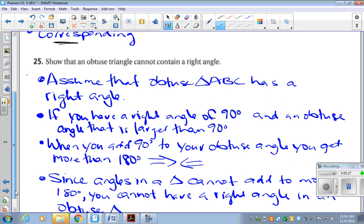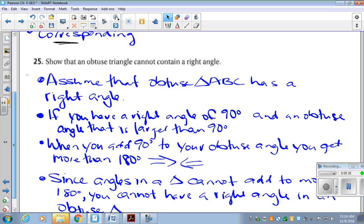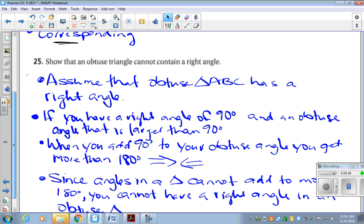For number 25, we're going to show that an obtuse triangle cannot contain a right angle. So the first thing we're going to assume is that obtuse triangle ABC has a right angle. Second step, if you have a right angle of 90 degrees and an obtuse angle that is larger than 90 degrees,